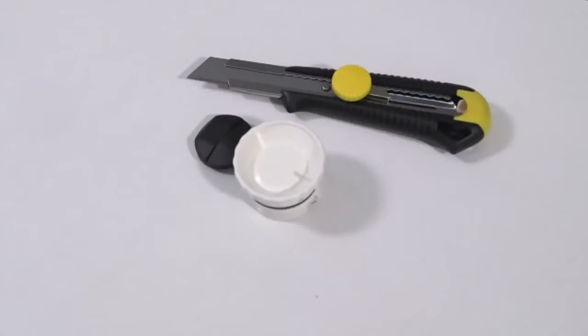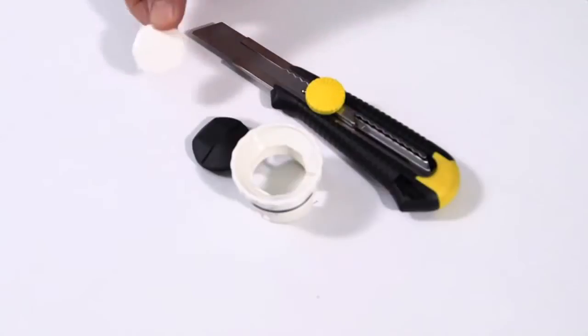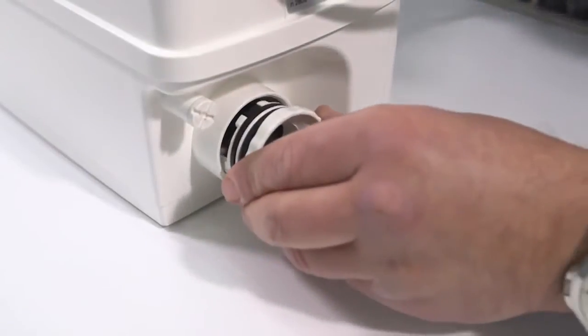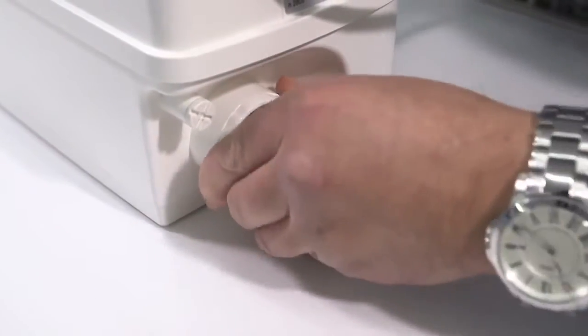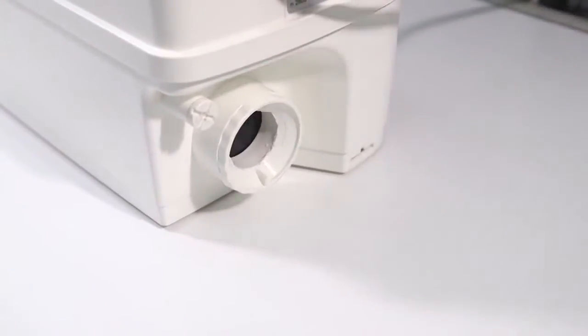To allow the sink waste pipe to connect, you'll need to cut out the blank entry in the cap with a sharp knife. Be careful not to damage the delicate non-return valve or your fingers. With the cutout complete, refit the cap and check the operation of the non-return valve.